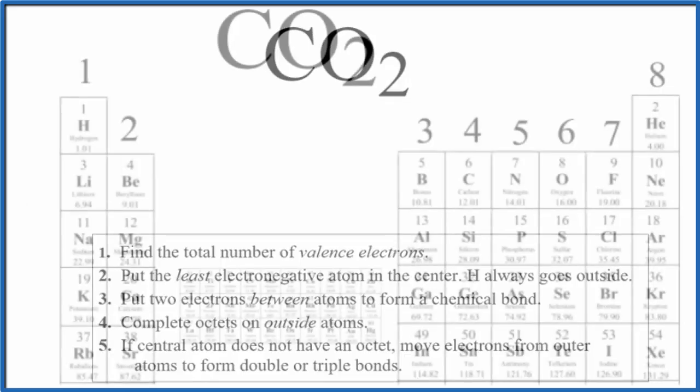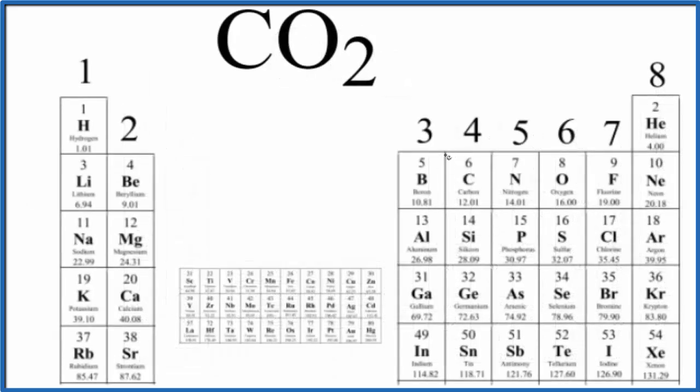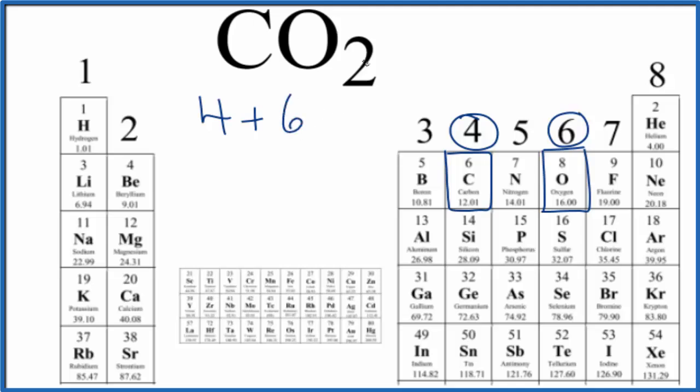If we look at the periodic table, we see carbon right here, group 14, sometimes called 4A. That has four valence electrons. So we have four valence electrons, and then oxygen right here, group 16, sometimes called 6A. That has six valence electrons. We have two oxygen atoms, multiply that by two. The total number of valence electrons for CO2 is four plus 12, 16 valence electrons for the CO2 Lewis structure.